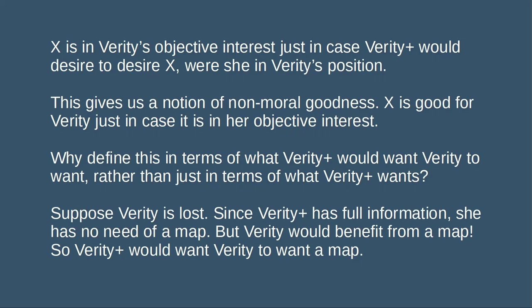This might seem like a somewhat convoluted definition. Why define this in terms of what Verity Plus would want Verity to want, rather than just in terms of what Verity Plus wants? Well, suppose that Verity is lost. Then we can say that a map would be desirable for Verity — it'd be in her interest to have access to a map. But notice that since Verity Plus has full information, she would not want a map for herself, because she would already know the way home. Verity Plus would want Verity to want a map — Verity Plus would want Verity to develop strategies to aid her, given her condition of limited knowledge. So in general, what is desirable for A is what A Plus would desire to desire, were she in A's shoes.